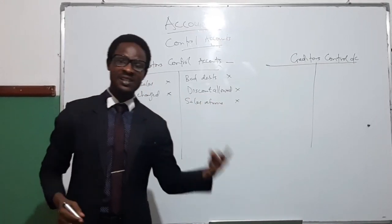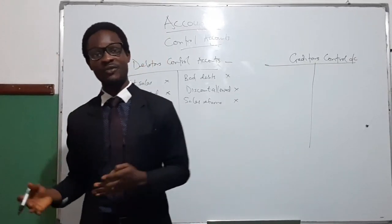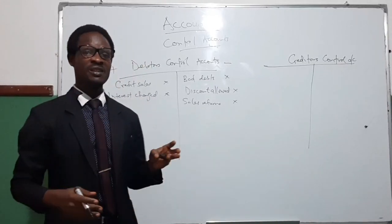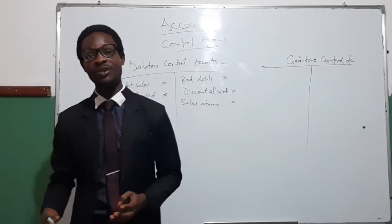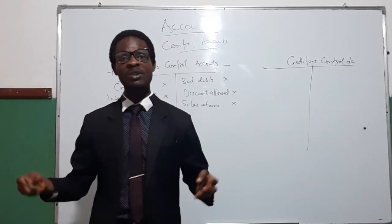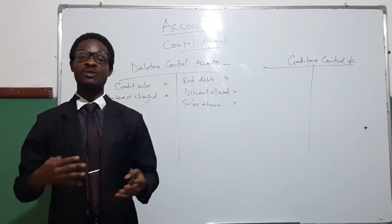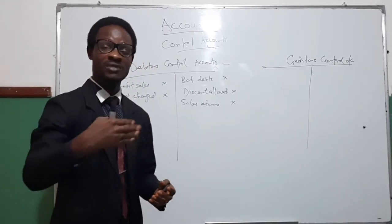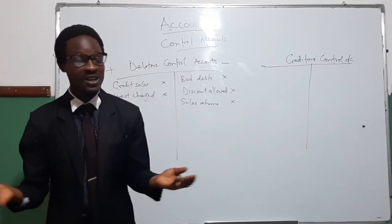Every other item, like amounts transferred from the sales ledger to the purchase ledger, will also reduce the debtors. This happens when a debtor is the same party as a creditor — the amounts set off one another. For example, if a customer owes $50,000 to the business and the business purchases goods of that same amount from them, there will be a contra set-off.